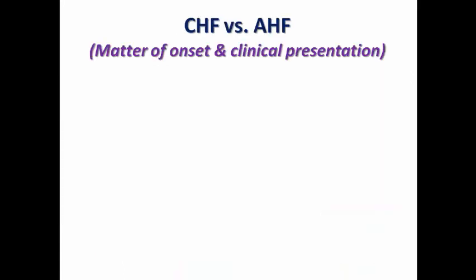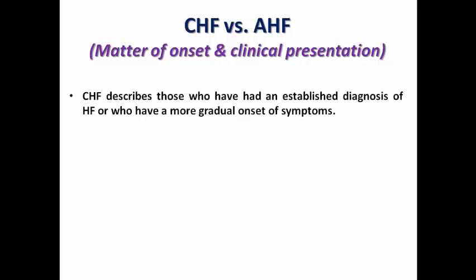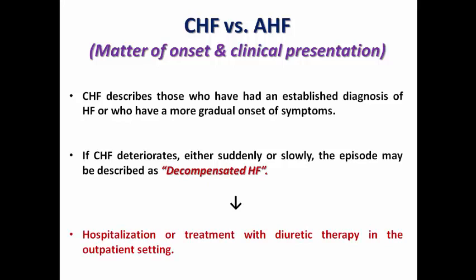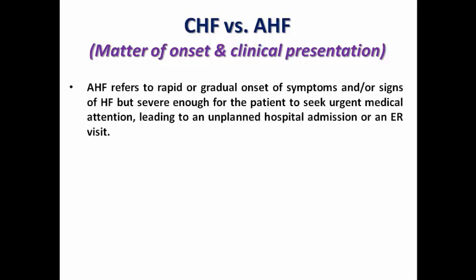Another way to classify heart failure is chronic versus acute, regarding onset and clinical presentation. Chronic heart failure describes those with an established diagnosis who may have a gradual onset of symptoms; if it deteriorates either suddenly or slowly, the episode is described as decompensated heart failure, which may result in hospitalization or outpatient diuretic therapy. Acute heart failure refers to rapid or gradual onset of symptoms and/or signs that are severe enough for the patient to seek medical advice.